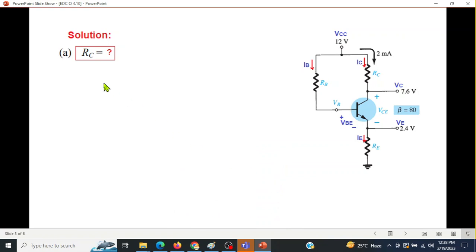Now to solve RC, this is RC, we can write VCC minus VC divided by IC. Let's do that. RC is VCC minus VC divided by IC, and VCC is 12 volt, VC is 7.6, and IC is 2 milliampere. Putting the values, RC is 2.2 kilo ohm.